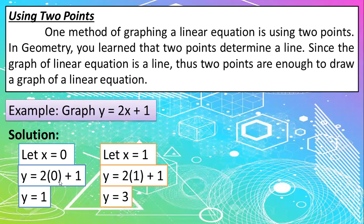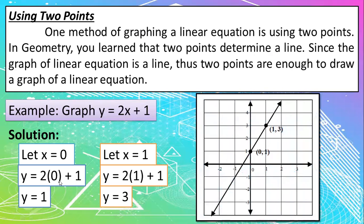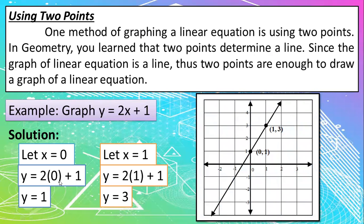So since we now have our ordered pairs, all we need to do now is to graph this pair. So this is 0 and 1. As you can see, it is located on the y-axis.